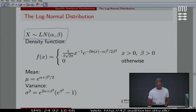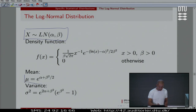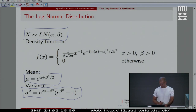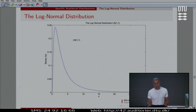We're going to go through it fairly rapidly without digging into the probability details. It has a formula for the density that you might recognize some normality in, but also something more complicated. It has a mean and a variance, which looks a bit nasty. It's a model you can use for positive phenomena.